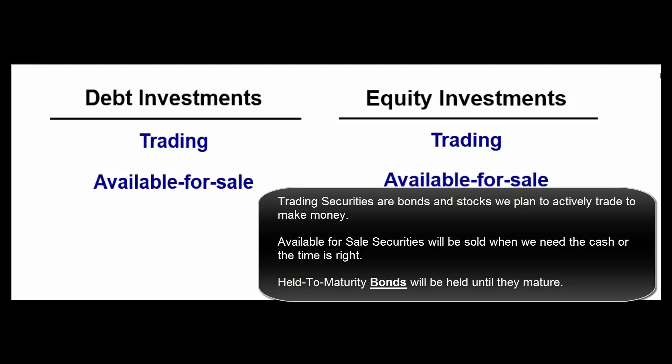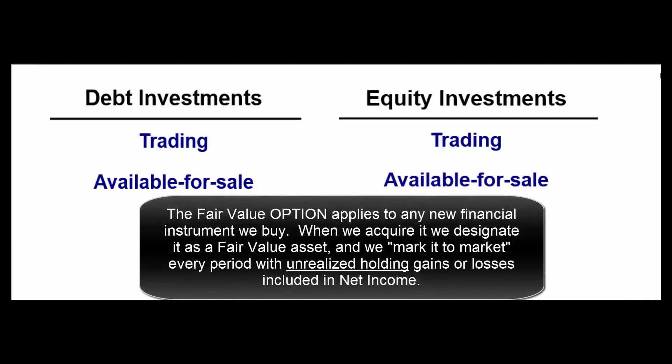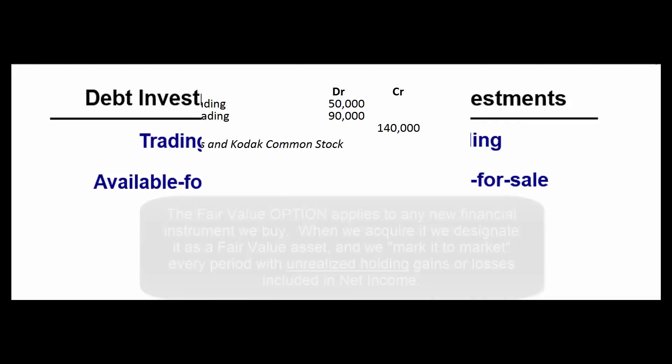There's also another option called the fair value option. Any time we buy a stock or bond, we can decide to record it using the fair value option. We mark it up and down with unrealized gains or losses, and those unrealized gains or losses always appear as part of net income. Let's look at some examples.